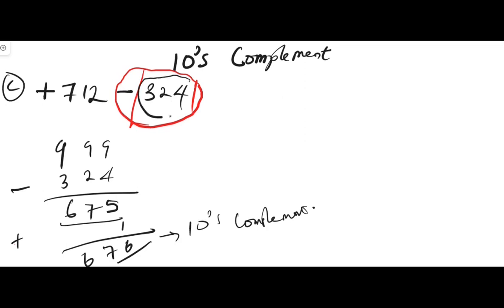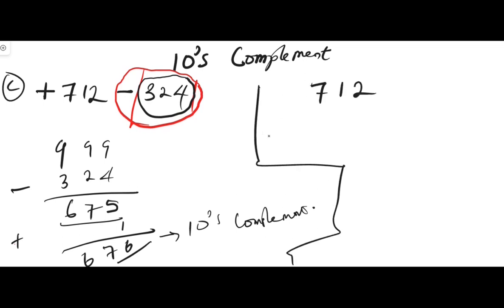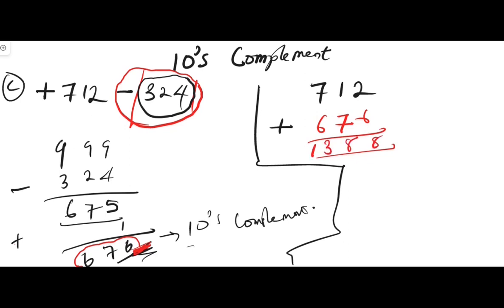Now we add 712 plus 676. Two plus six is eight, seven plus six is thirteen — carry one, one plus one plus seven is nine. We have a carry in ten's complement — you discard the carry. So the answer is 388, and it is positive.